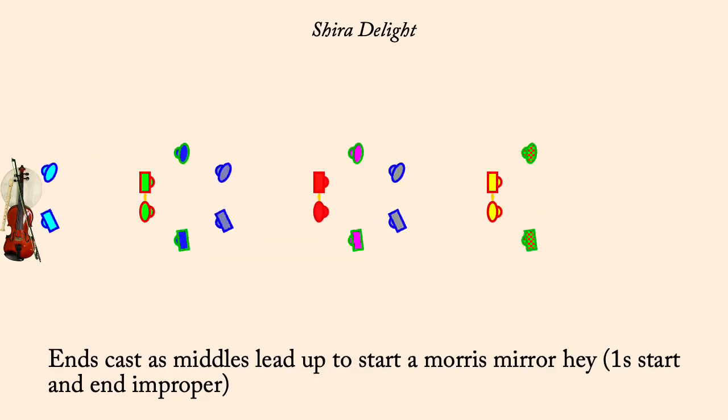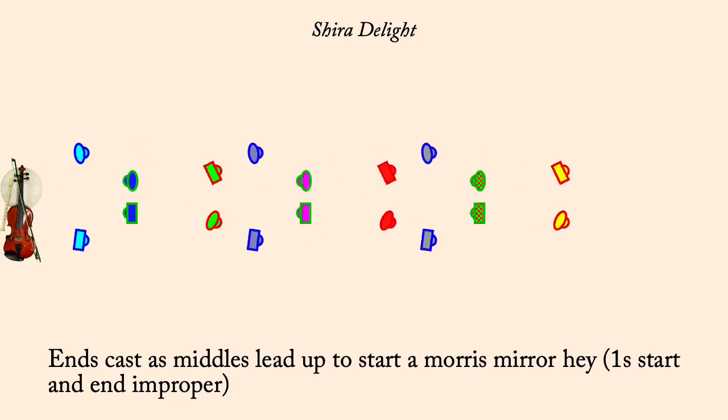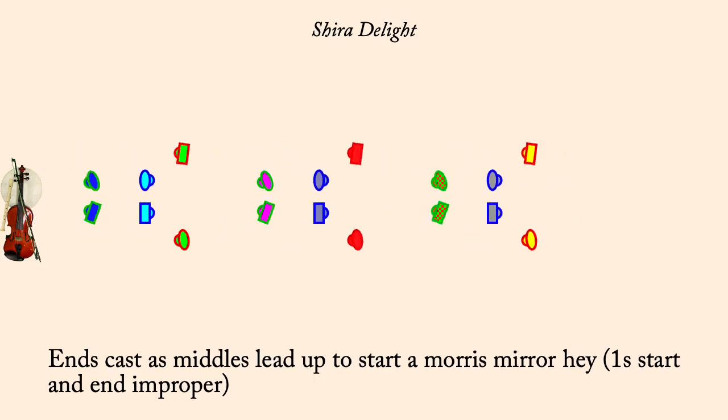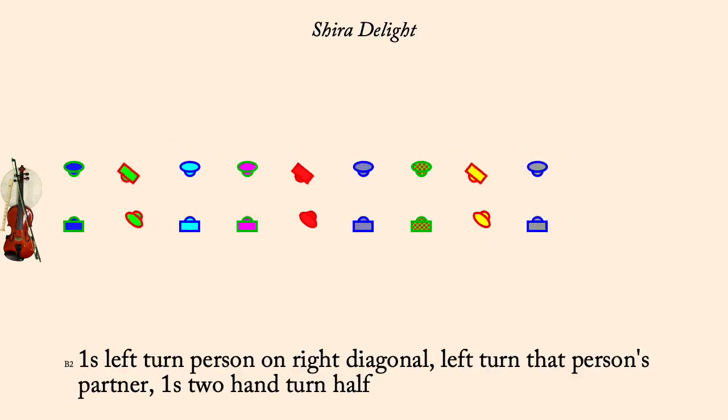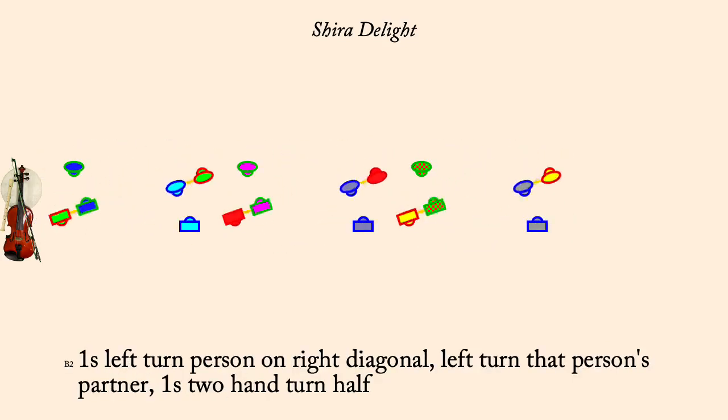Ones left turn person on right diagonal, right turn their partner, ones two-hand turn half.